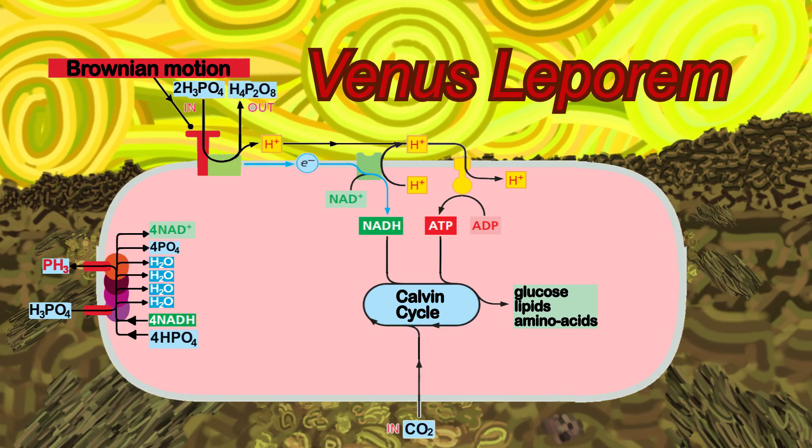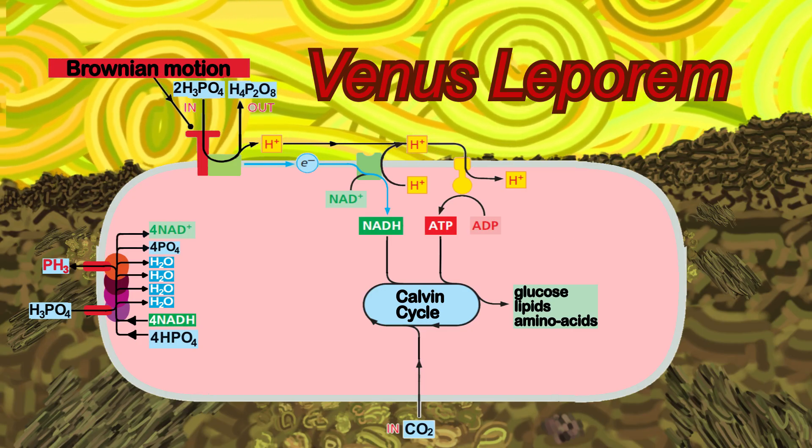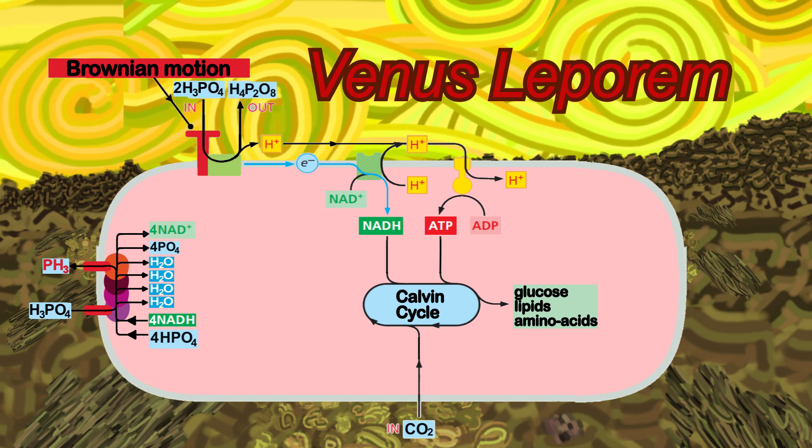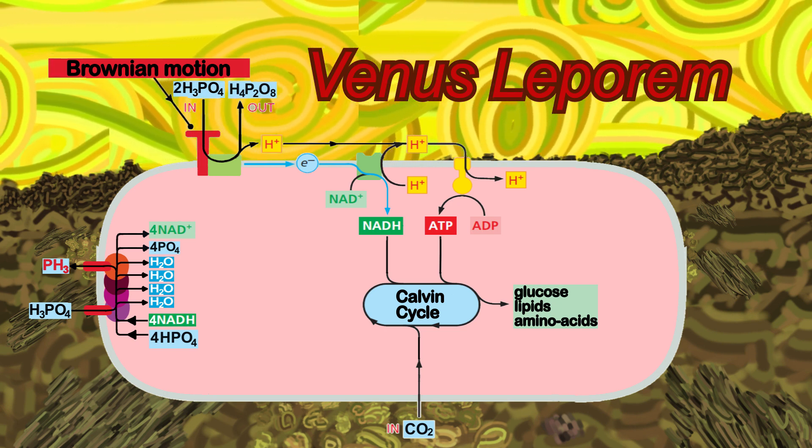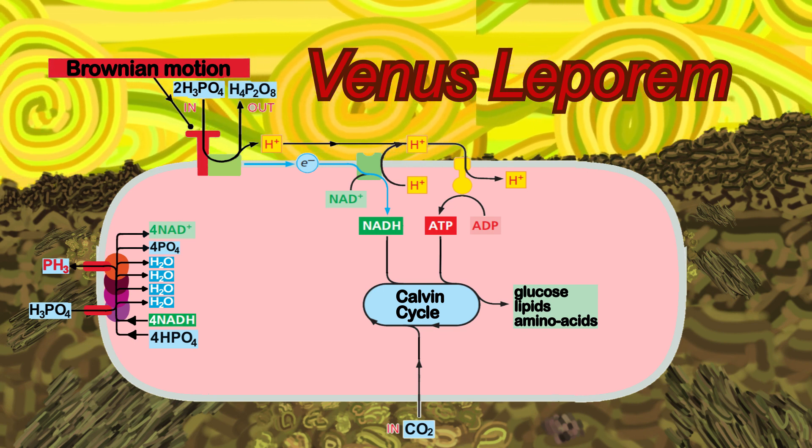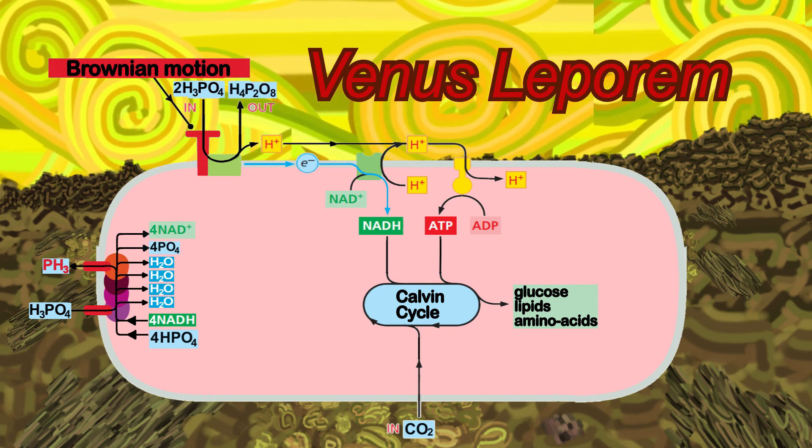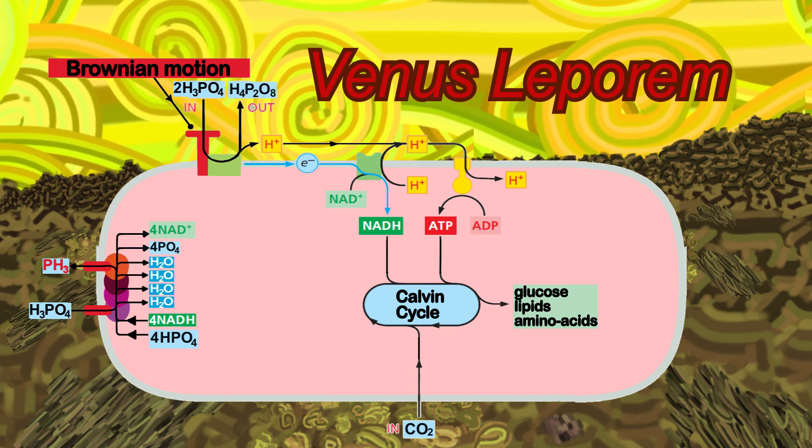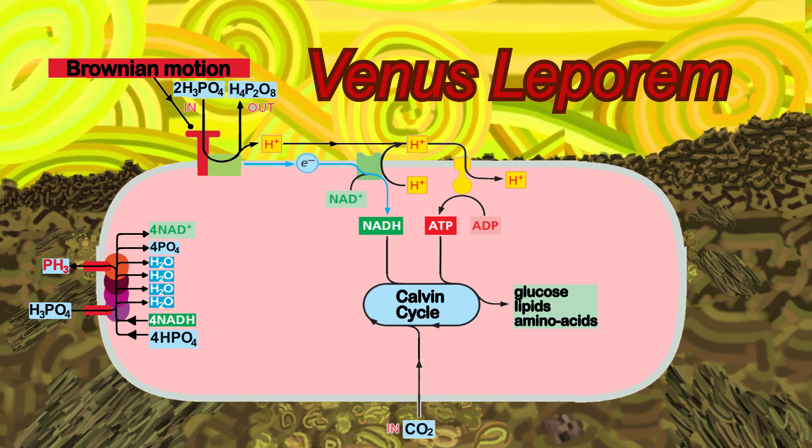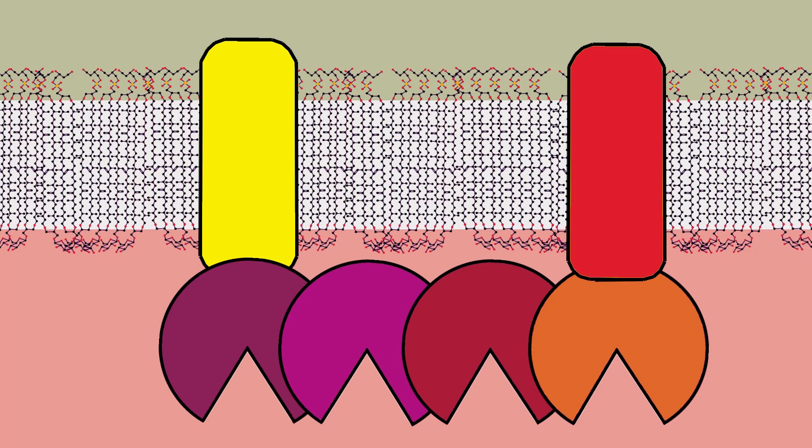We have already seen how Venus Leparem obtains energy, electrons, and carbon, but something more important than these three variables is water, and in these chemical reactions no water was produced. Now let's see how Venus Leparem could synthesize its own water from Venus stones, having phosphine as a waste product. In the membrane of Venus Leparem I am going to put some fictitious proteins that form a protein complex that I will call hydrosome.